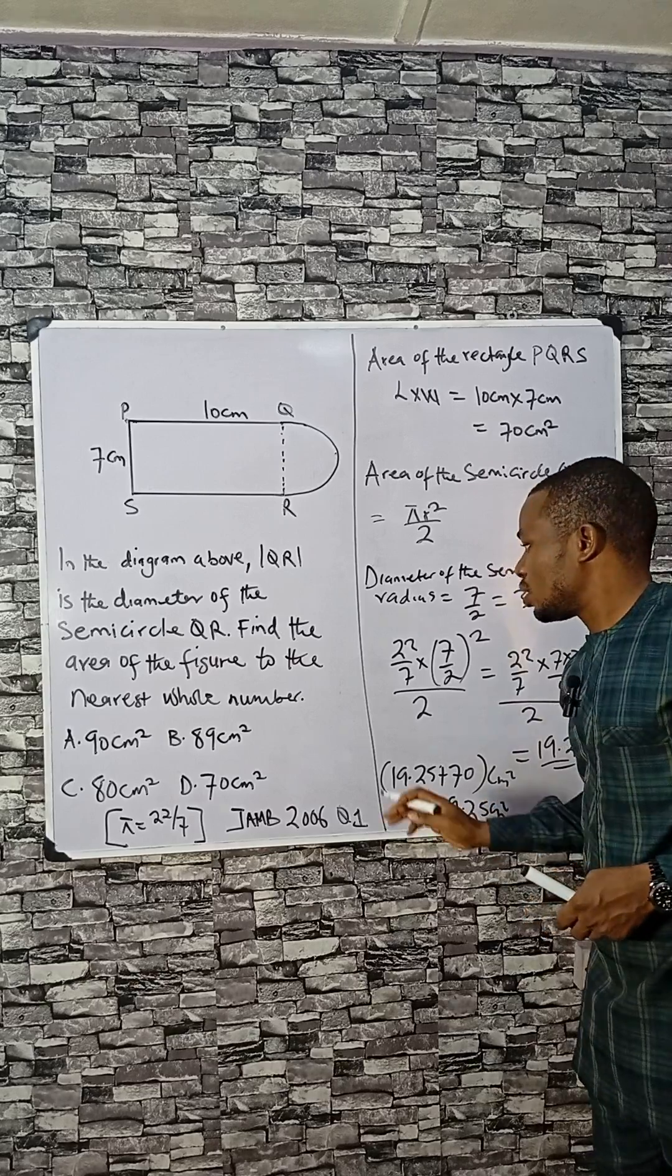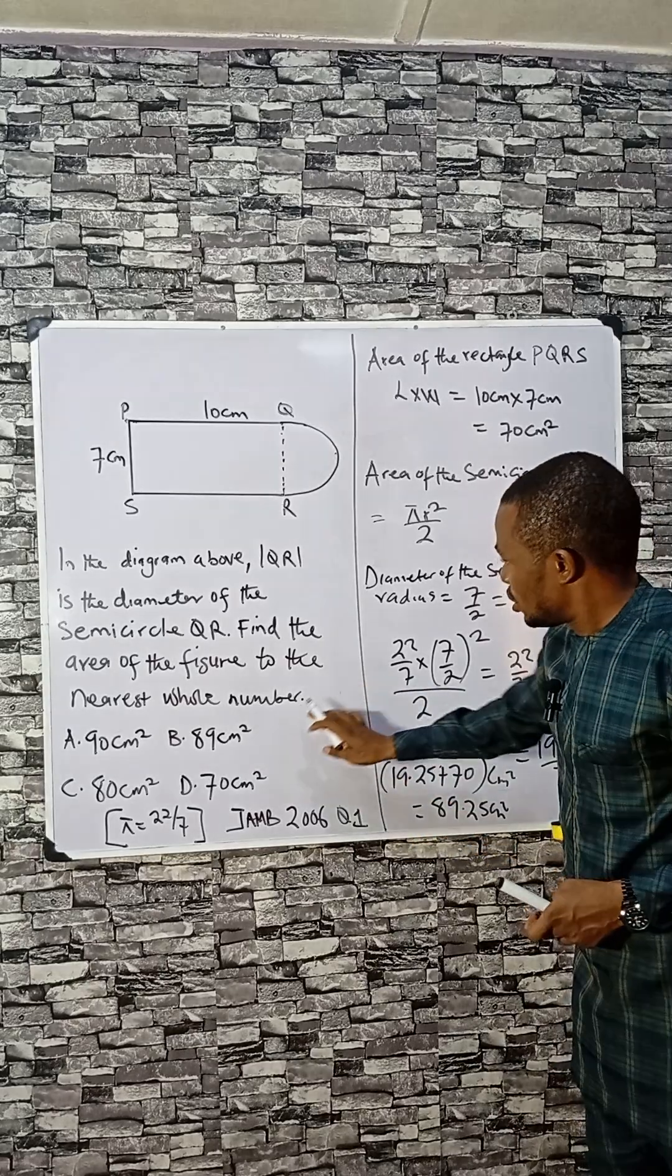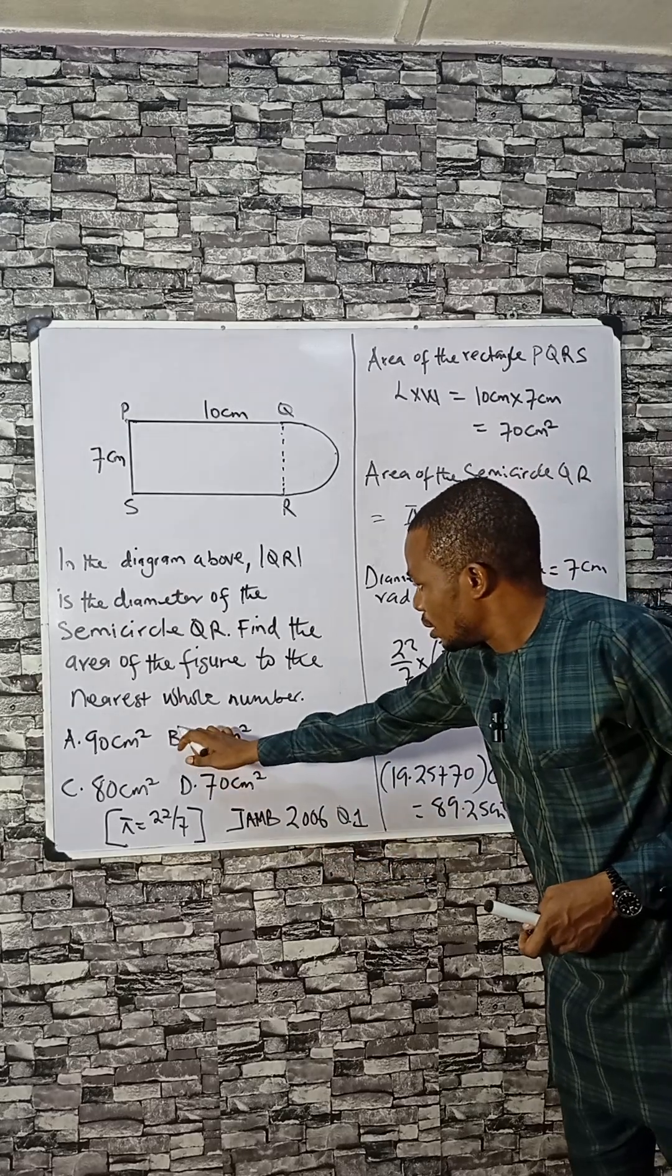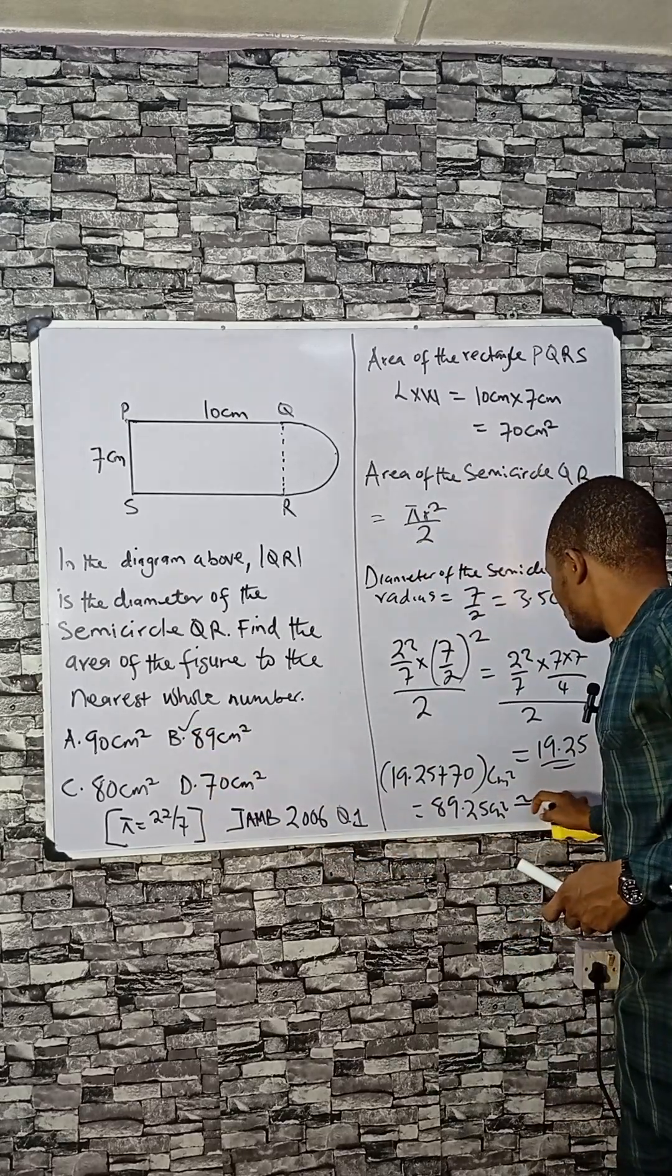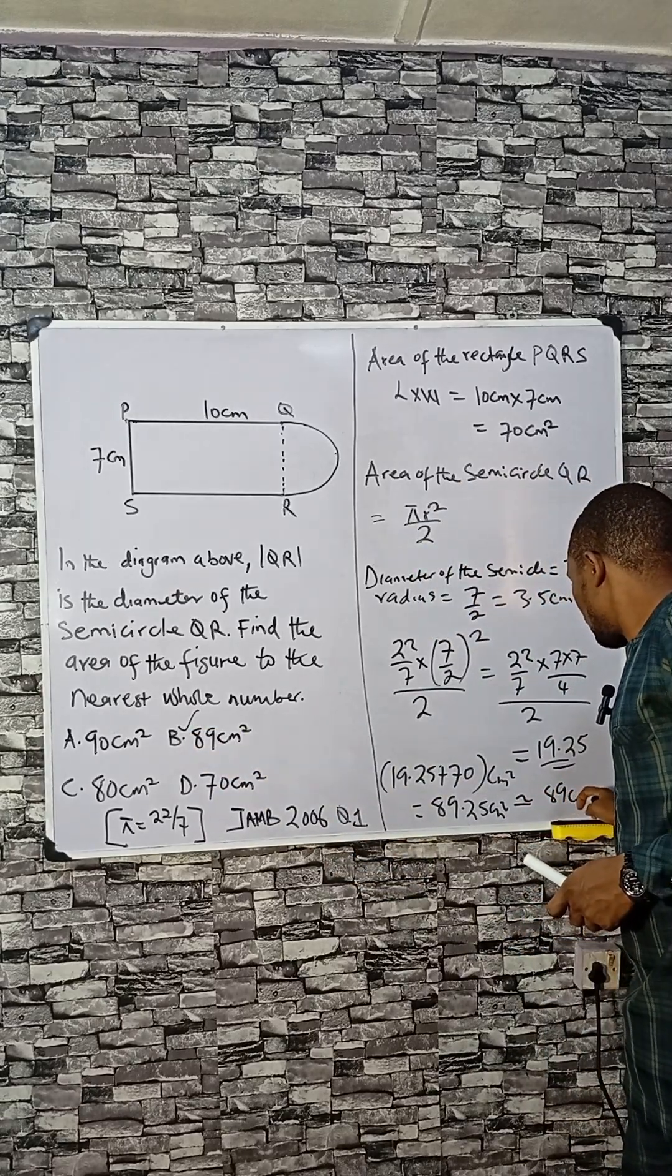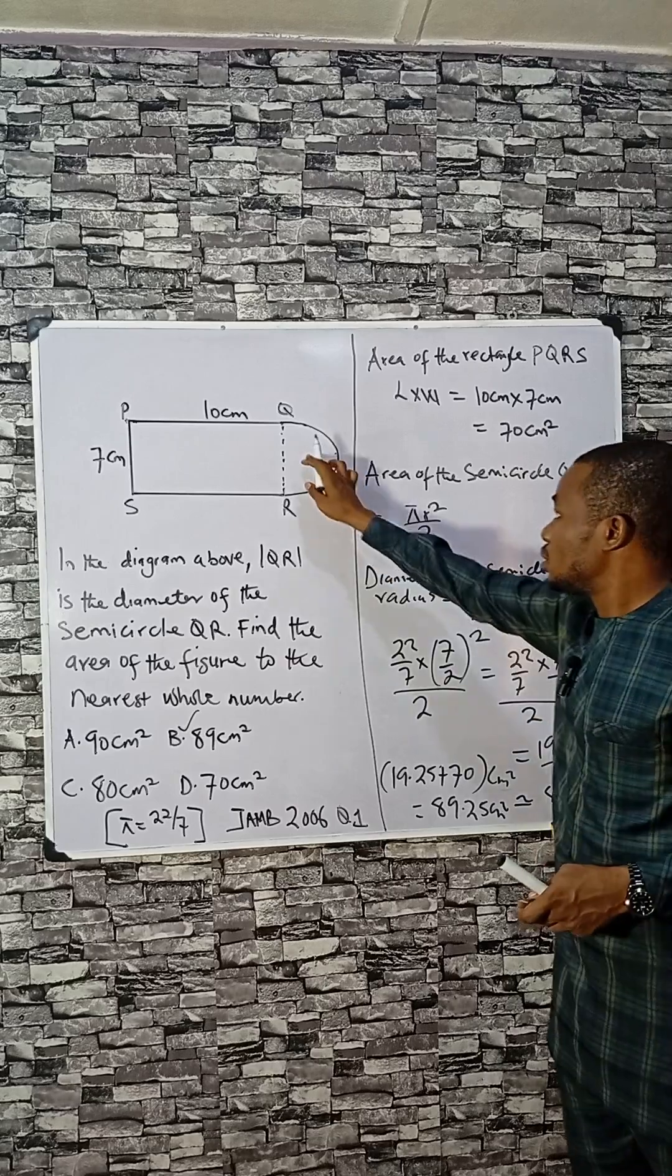If you check the closest answer, we were asked to round to a whole number. B is 89, the correct approximation. 89 cm squared is the area of this figure.